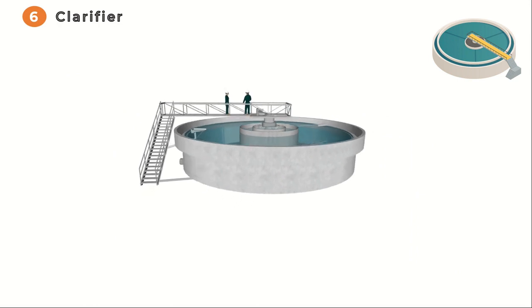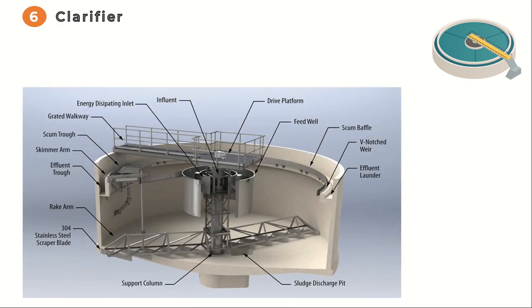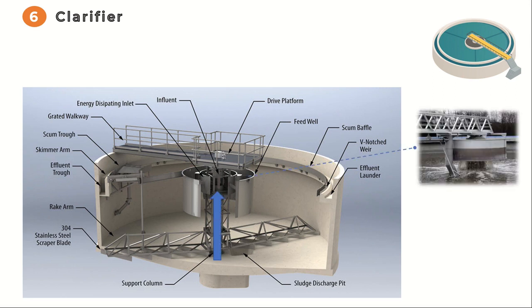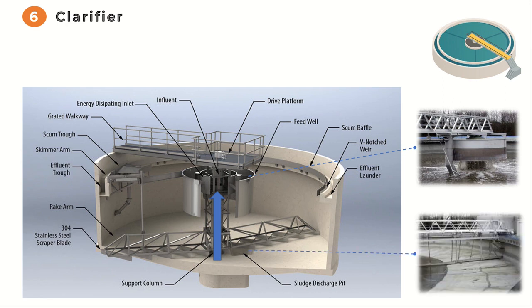The sixth step is final sedimentation. The secondary clarifier is an essential component of a wastewater treatment plant, playing a crucial role in the removal of suspended solids from the treated water before it is discharged. Comprising several key parts, the secondary clarifier ensures efficient solid-liquid separation. The wastewater enters the clarifier through the inlet, where it is distributed evenly across the settling zone. Within this zone, the velocity of the water decreases, allowing the suspended particles to settle down. The settled solids are then collected by a sludge collection mechanism, typically consisting of rotating arms or scrapers that slowly move across the bottom, gathering the accumulated sludge.